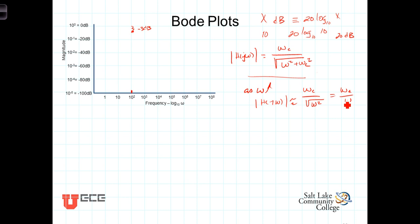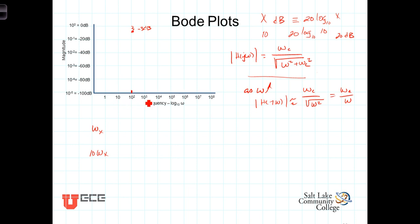Let's now plot two points on this Bode plot. Let the first point be at some frequency ω_x, and then we'll look at a point at 10 times ω_x. In a logarithmic scale, when you move by a factor of 10 — say from 100 to 1,000 — we refer to that difference as a decade. So there's one decade from 1 to 10, another from 10 to 100, another from 100 to 1,000, and so on. Each of those increments represents one decade.